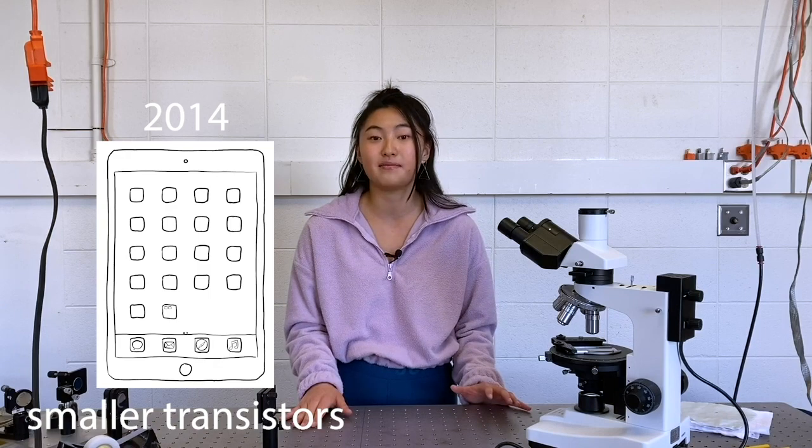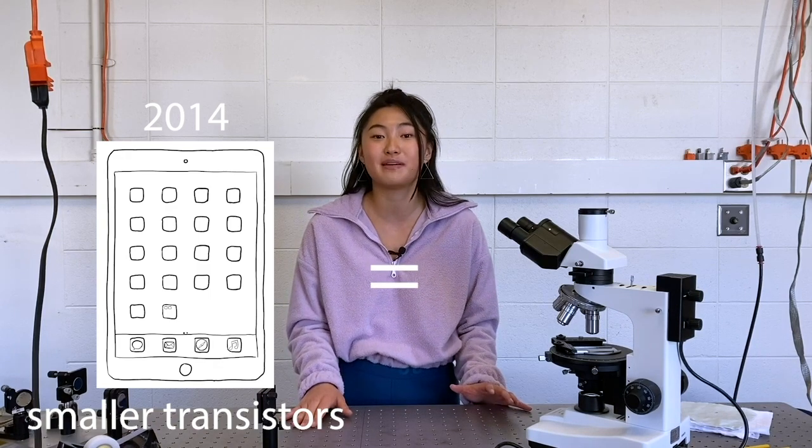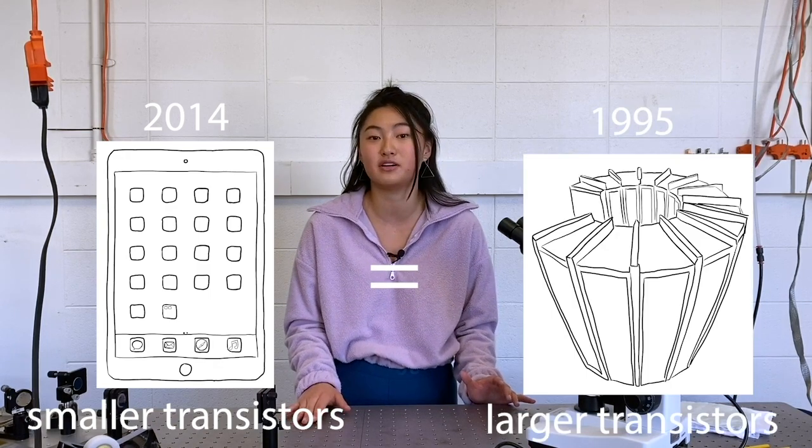For example, the 2014 Apple iPad had around 3 billion transistors making it as powerful as a fast supercomputer in 1995.